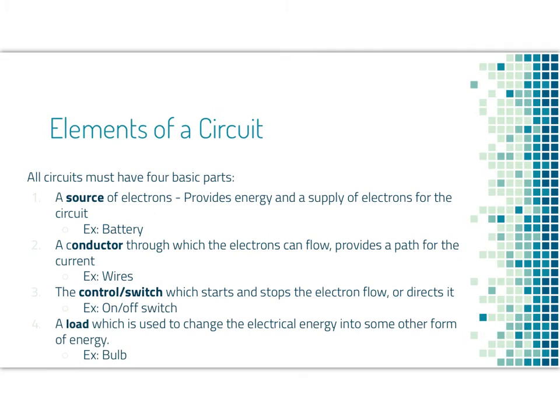There's a few different elements of a circuit. All circuits must have four basic parts. They must have a source of electrons, which provides the energy and the supply of electrons for the circuit, for example, a battery. A conductor is where the electrons can flow. It provides the pathway. So the conductor would be the wires. A control or a switch that can start or stop the electron flow, or directs it through different branches. And a load, which is used to change the electrical energy into some other form of energy, so a light bulb, a motor, those types of things.